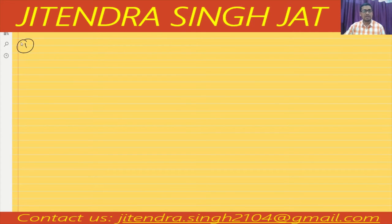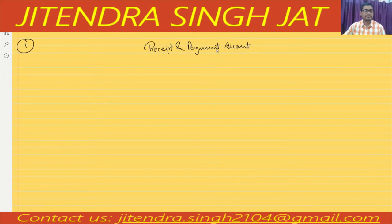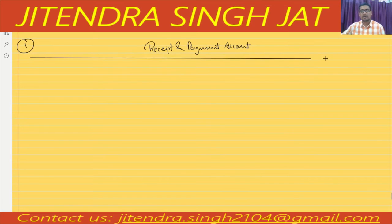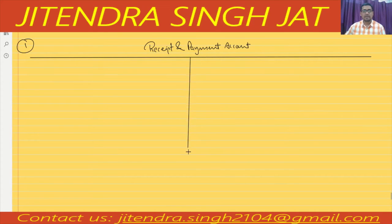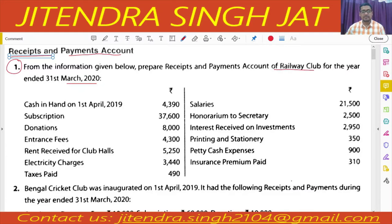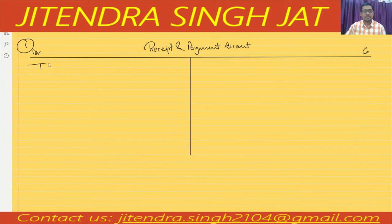Let us solve this question quickly. This is how to prepare a receipts and payment account. We have the debit side and credit side. We simply start with balance brought down: 4,390.